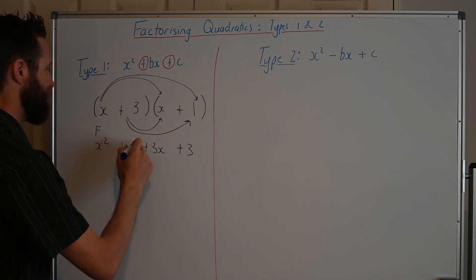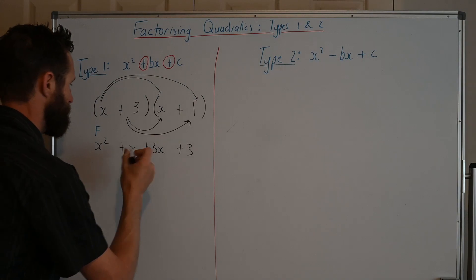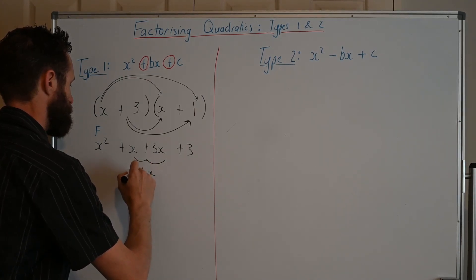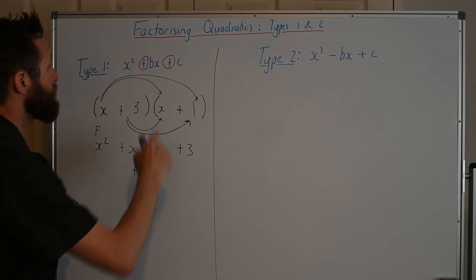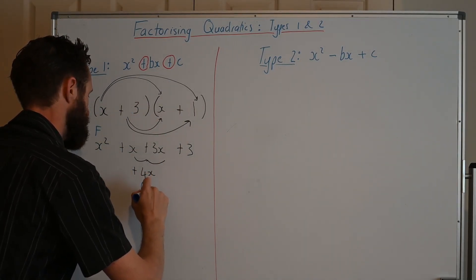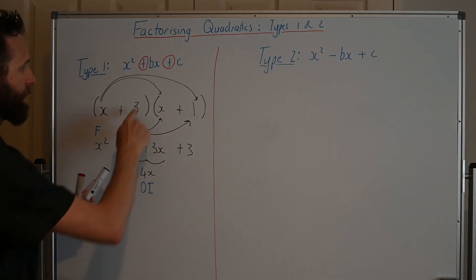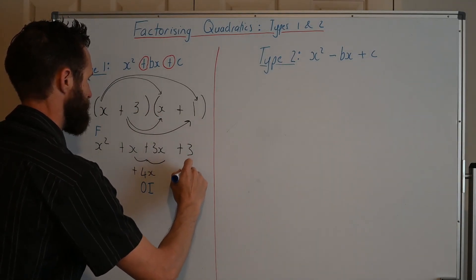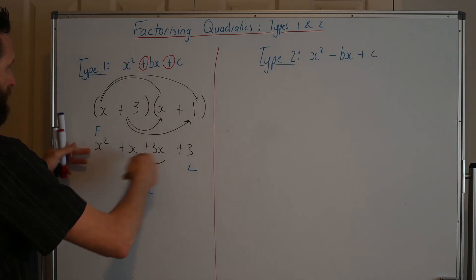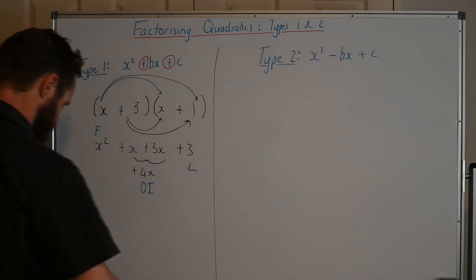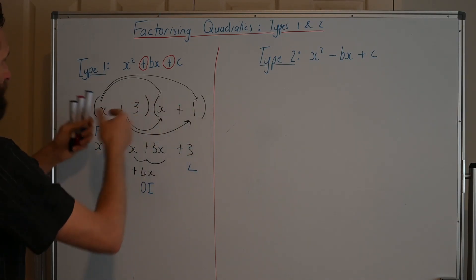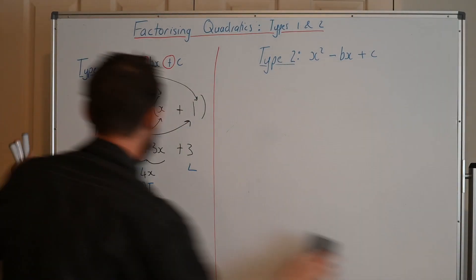And this here, we can simplify this bit here to 4x. And the x term is made up of your outers and your inners. So this is OI. And then the 3 is made up of your lasts. So that's how we get x² + 4x + 3 by expanding. Now, let's just go backwards and see if we can work out how we get from this to that.